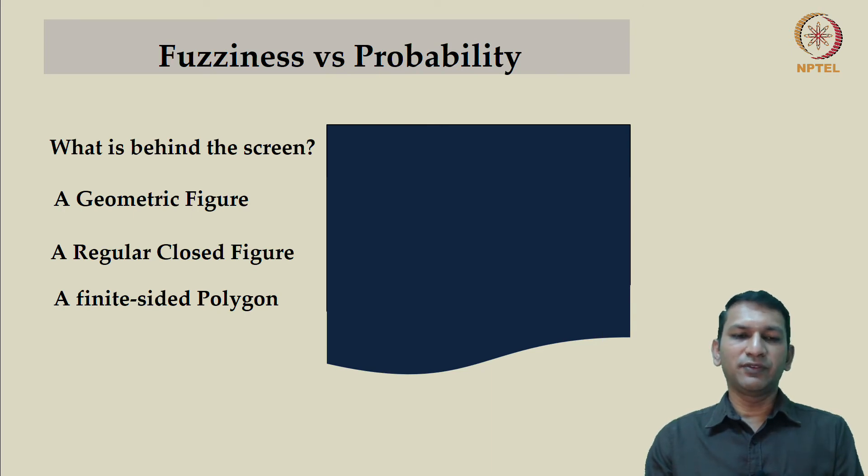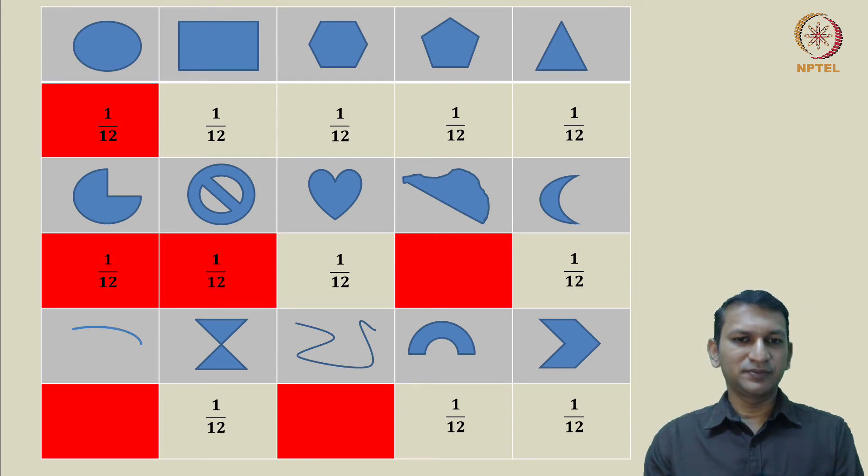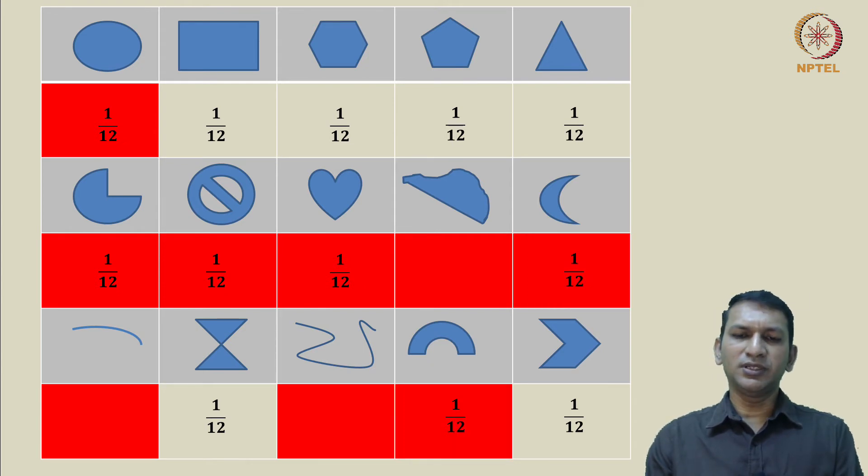Now, we are given yet another piece of information that it is a finite sided polygon. Once again, going back to this table, we see that this immediately eliminates a circle, this figure, this heart shape, the crescent and also the horseshoe magnet. So, we reduce the sample space from 15 to 12, and a further 6 of them are excluded. Now, we are left only with 6 out of the original 15 figures that we considered in the sample space.